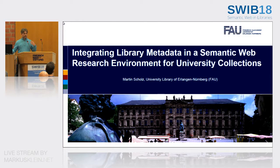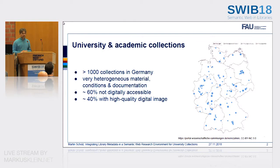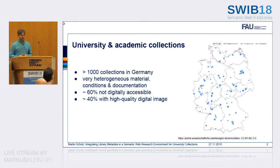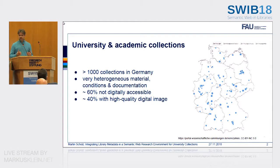First, let me tell you something about university and academic collections if you are not familiar with that. In Germany we have over a thousand collections in university and other academic institutions. All these collections are very heterogeneous in many different ways — for example, the collection of objects of different materials, different genres. The objects have different conditions, but also the collections as a whole, and also documentation and digitization, is very different in each collection.